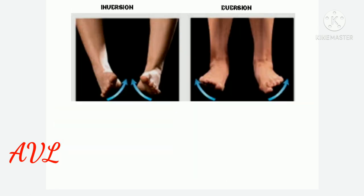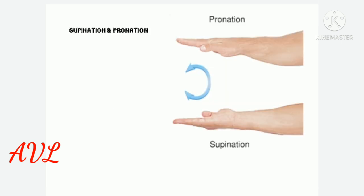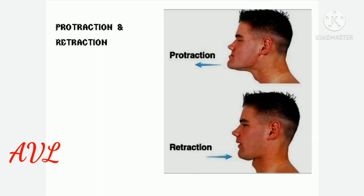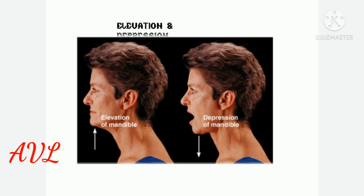Inversion of the foot is when the medial border of the foot is raised from the ground. Eversion of the foot is when the lateral border of the foot is raised from the ground. Supination is when the palm faces upwards; pronation is when the palm faces downwards. Protraction is when the lower jaw slides forward in its socket in the temporal bone of the skull; retraction is when it slides backward. When the lower jaw comes closer to the upper jaw it is called elevation; when the lower jaw is lowered from the upper jaw it is called depression.